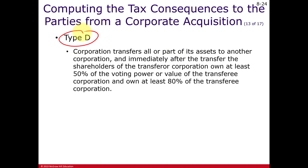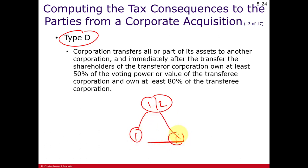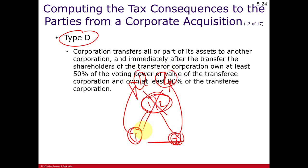Type D — D meaning divisive — is used to split up or spin off operations or subsidiaries from a parent corporation. For example, if one corporation has two different operations or two shareholders who can't get along, you can form subsidiaries for each and transfer the assets, then exchange parent stock for the subs' stock so each person ends up owning their own corporation. There are many variations under Type D, but our textbook doesn't go into them in detail.